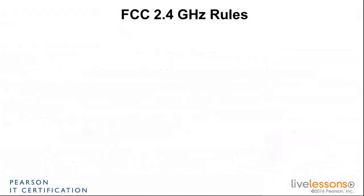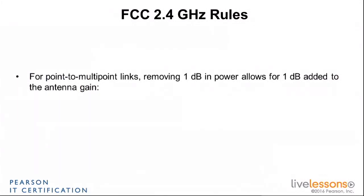Those rules can be very complex. For the FCC exam, you don't need to know all the rules of all countries, but you need to have awareness of different rules for different countries, which may have some consequences for how you transmit. For example, the FCC has a rule in the 2.4 GHz band that says if you're designing an outdoor point-to-multipoint link, you have the right to change your transmitter power and also the gain of your antenna using the one-to-one rule: if you decrease your transmit power at the access point by 1 dB, you can increase your antenna gain by 1 dB.